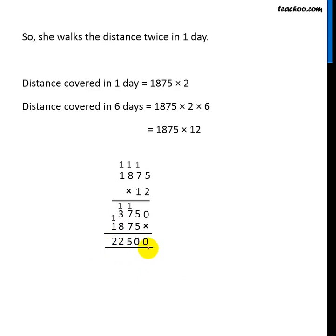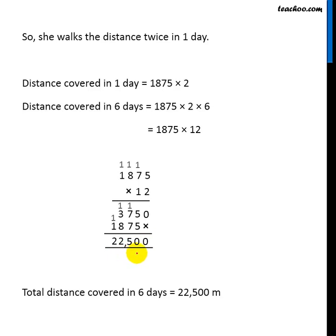Now we add a comma after three digits. So our distance covered in six days is twenty-two thousand five hundred meters.